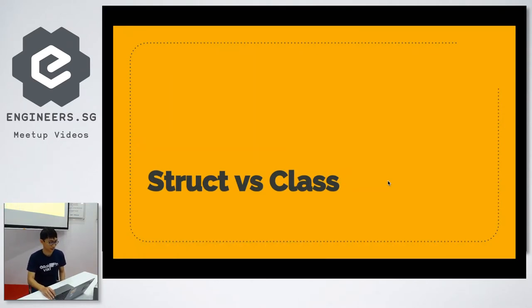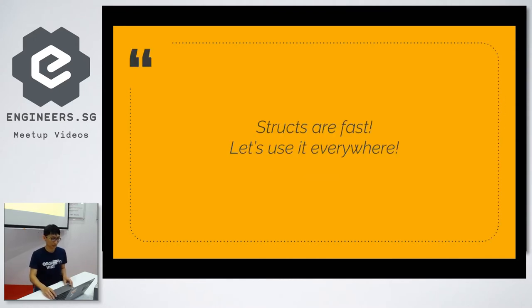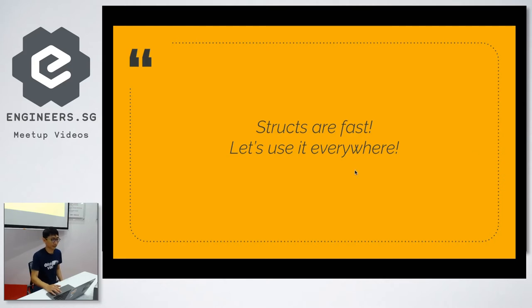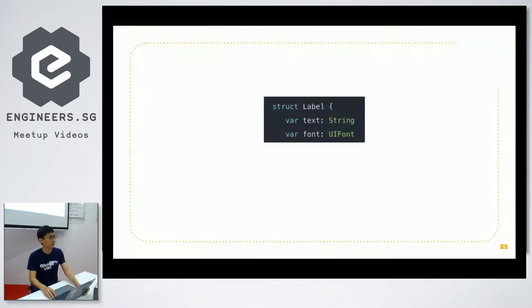For the second topic: struct versus class. You might run into this situation a lot — whether to use struct or class for your data. When I first heard about Swift, with the introduction of value types and structs, I had this thought: structs are very fast, I should be using them everywhere. But actually, this is not always true. Things get quite a bit more complicated when you have a struct with reference types inside.